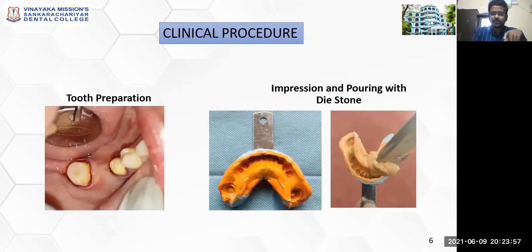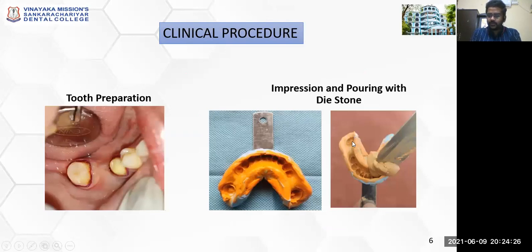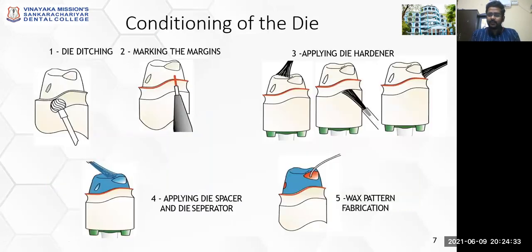Regarding the clinical procedure: we are planning to give a three-unit fixed partial denture in the missing region, where the premolar and molar have been prepared and the pontic molar will be replaced. Once preparation is done, a putty–light body elastomeric impression is made and die stone is poured over it so that a cast is obtained. With the cast we can work in the laboratory. The cast is then sectioned so that a separate die or a set of teeth can be sectioned to get a die.